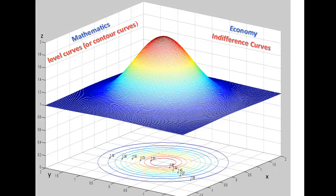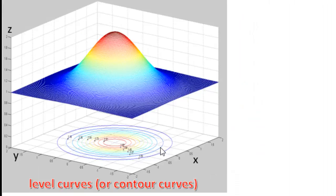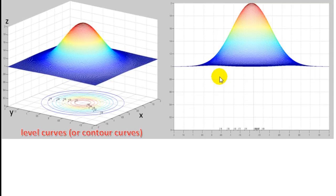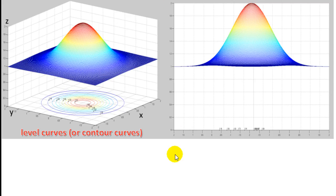If you see this figure from a lateral view, you get this, where the base camp is 1,000 meters, the summit is 2,000 meters, and zero is the sea level.